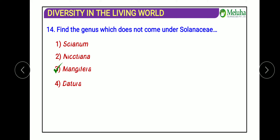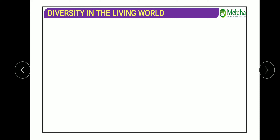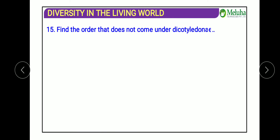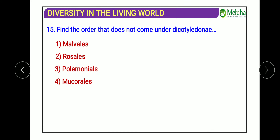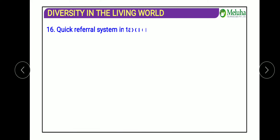The next question: find the order that does not come under dicotyledons. The options are Malvales, Rosales, Polygonales, and Mucorales. Mucorales does not come under dicotyledons. The remaining orders — Malvales, Rosales, and Polygonales — all belong to dicot plants.